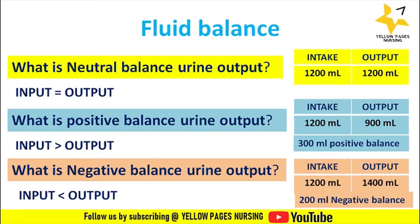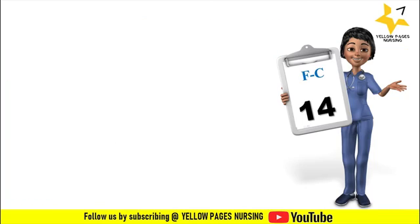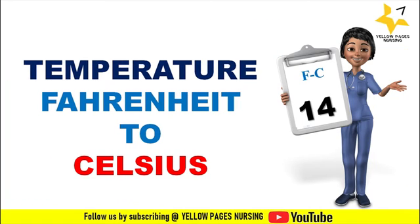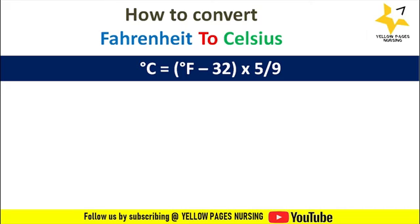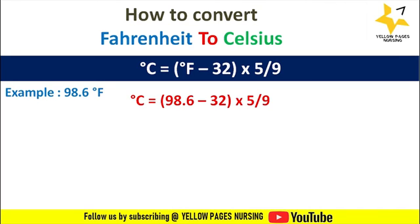Next comes calculation of temperature conversion from Fahrenheit to Celsius. The formula is: Celsius = (Fahrenheit − 32) × 5/9. For example, the temperature is 98.6°F. So Celsius = (98.6 − 32) × 5/9, and we get the answer 37. The temperature will be 37°C.